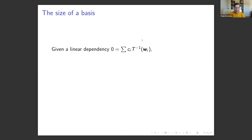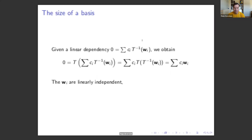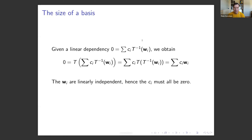Given a linear dependency of these factors, we obtain that zero equals T of the sum of ci times T-inverse(wi), and using linearity properties we get this equal to ci times wi. Since the wi's are linearly independent, those ci's must equal zero, so there is only a trivial linear combination giving the zero vector. Therefore, the T-inverse of wi are linearly independent.